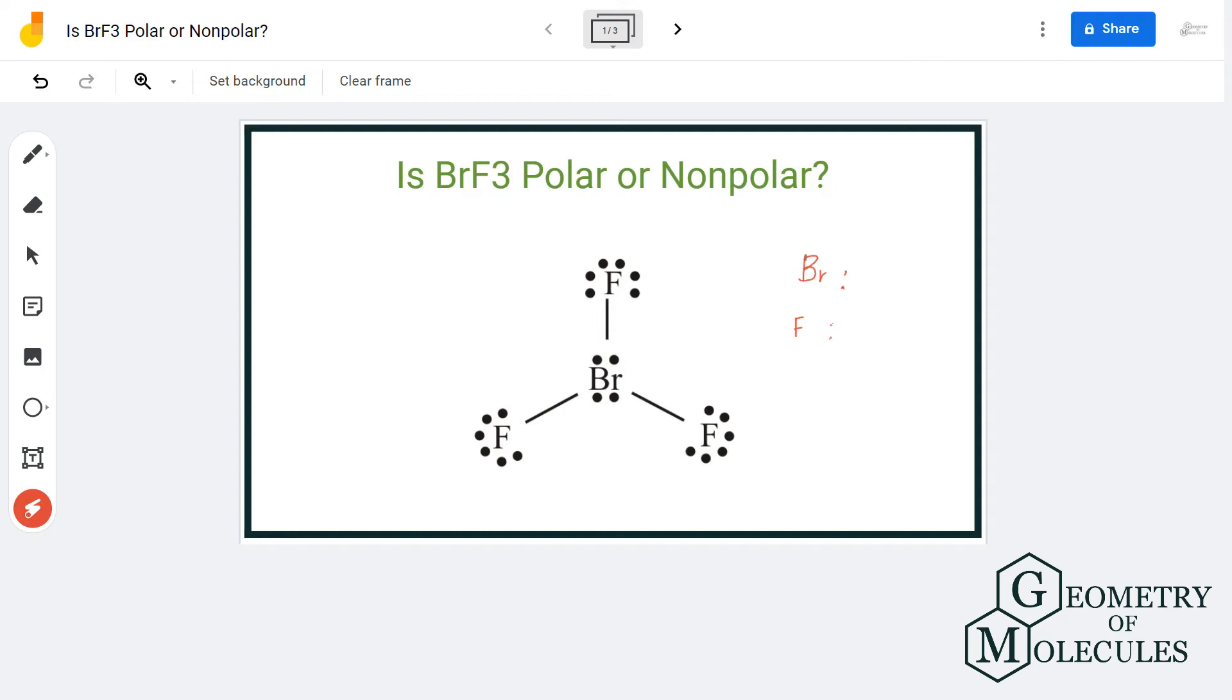Hi guys, in this video we are going to determine the polarity of BrF3 molecule. Now BrF3 is a chemical formula for bromine trifluoride made up of one bromine atom and three fluorine atoms. So to understand the polarity we shall first look at the Lewis structure of this molecule.